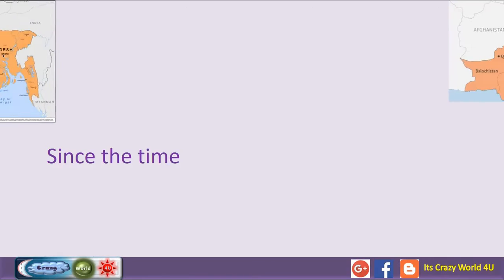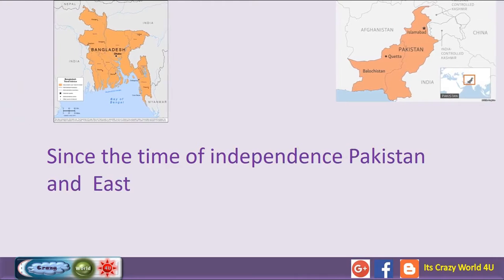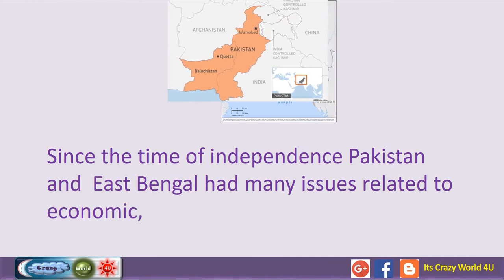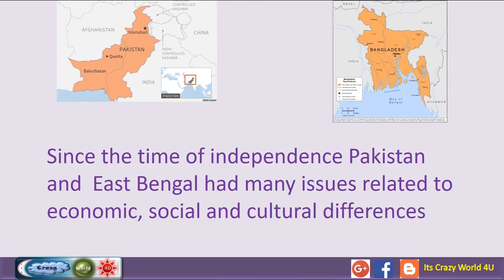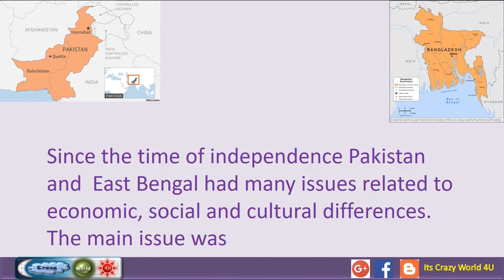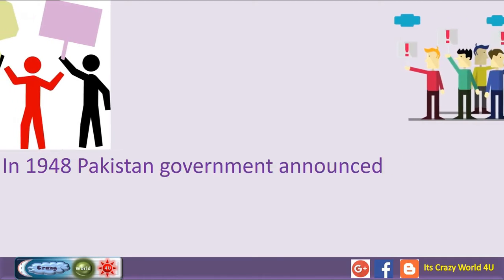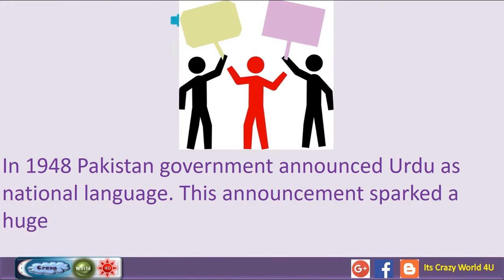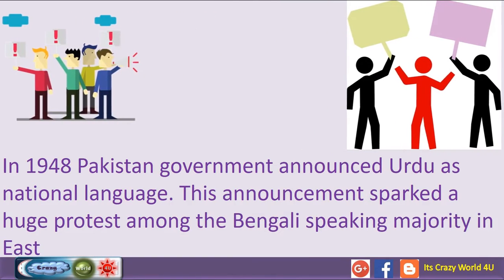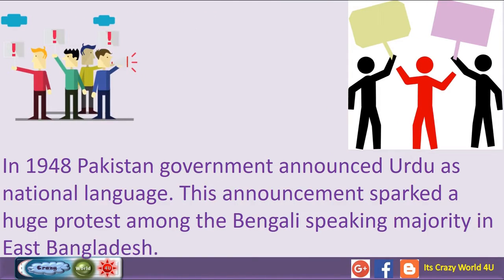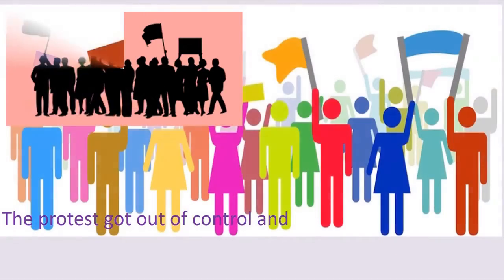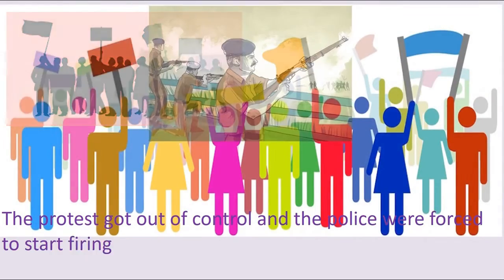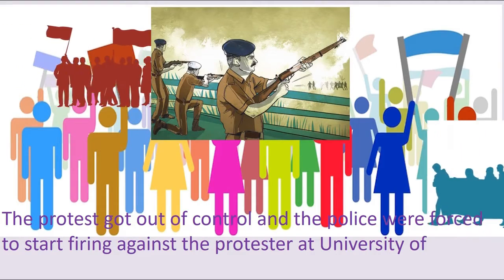Since the time of independence, Pakistan and East Bengal had many issues related to economic, social and cultural differences. The main issue was related to language. In 1948, the Pakistan government announced Urdu as the national language. This announcement sparked a huge protest among the Bengali-speaking majority in East Bangladesh. The protest got out of control and the police were forced to start firing against the protesters at the University of Dhaka.